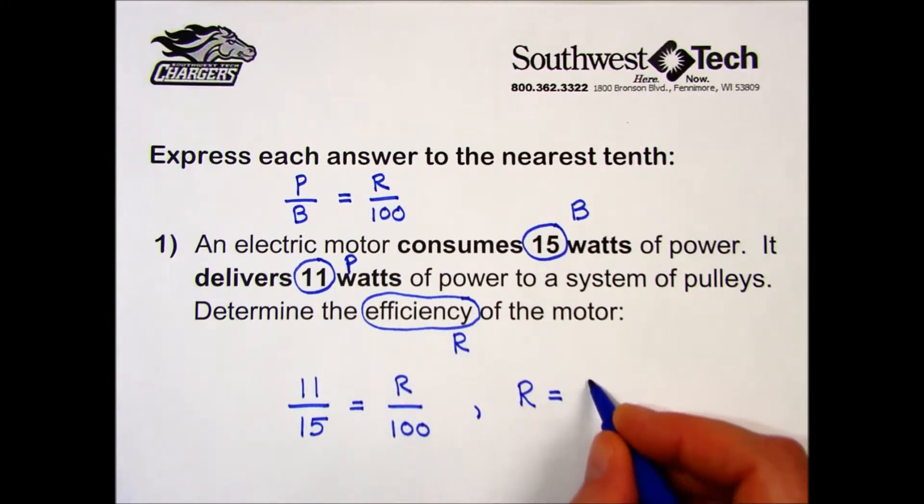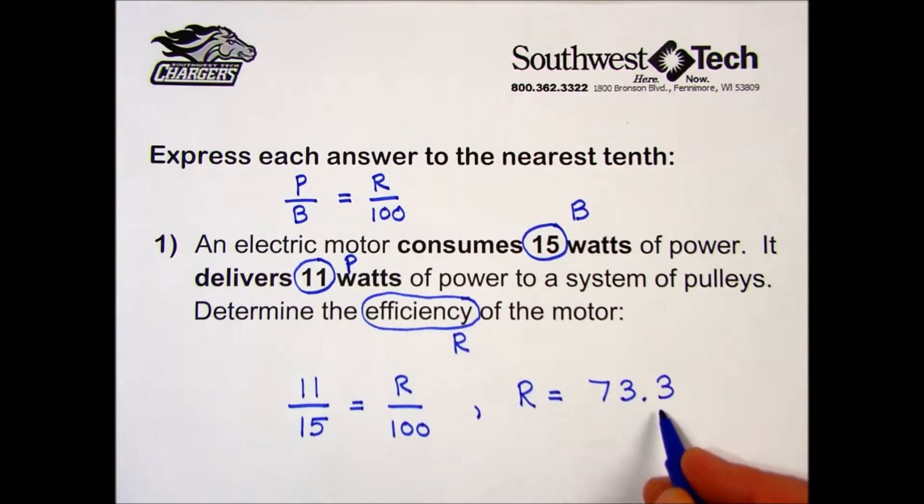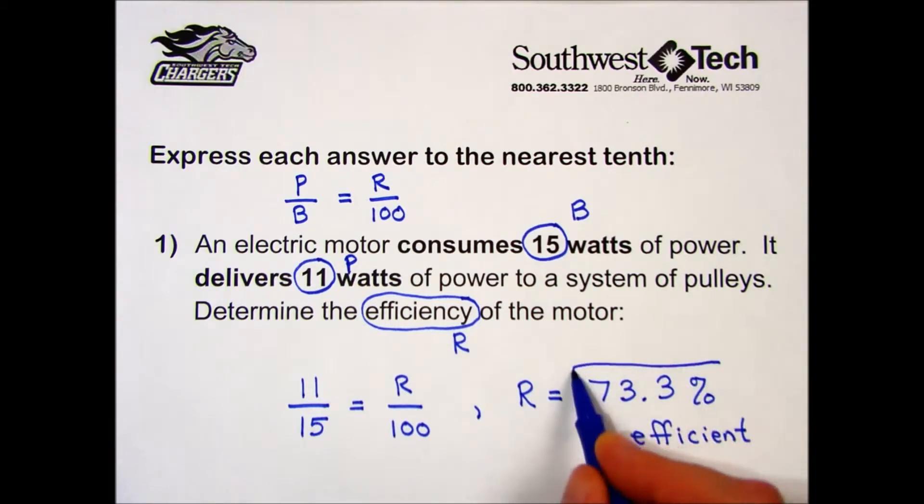My calculator gave me 73.3 rounded to the nearest tenth, and I add a percent symbol. This electric motor is 73.3 percent efficient.